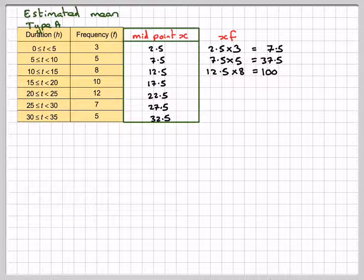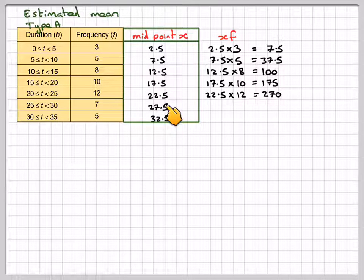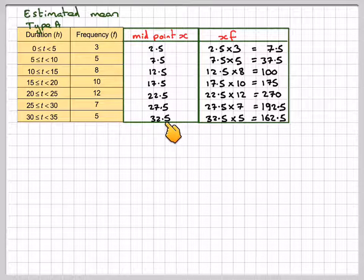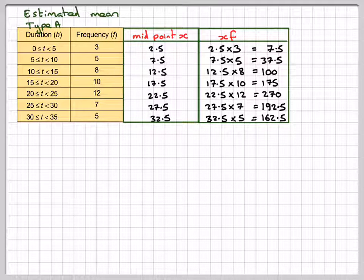17.5 times 10, which is 175. 22.5 times 12, which is 270. 27.5 times 7, which is 192.5. And then 32.5 times 5, which is 162.5.